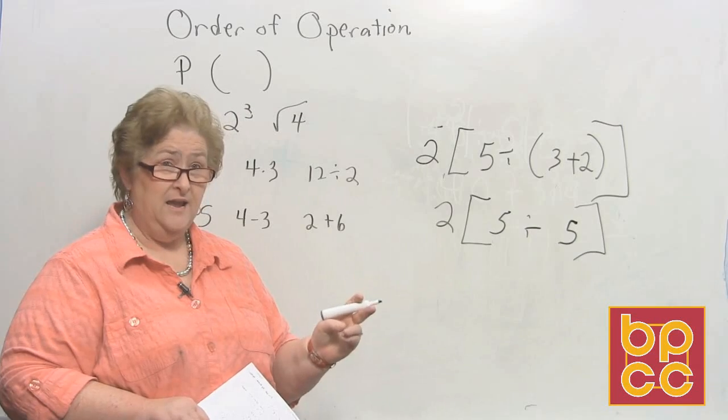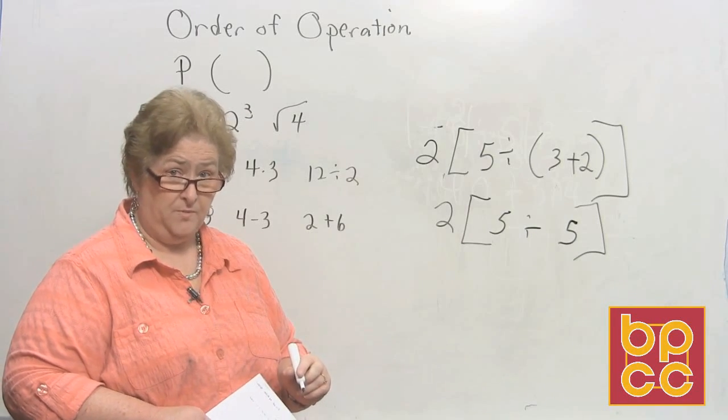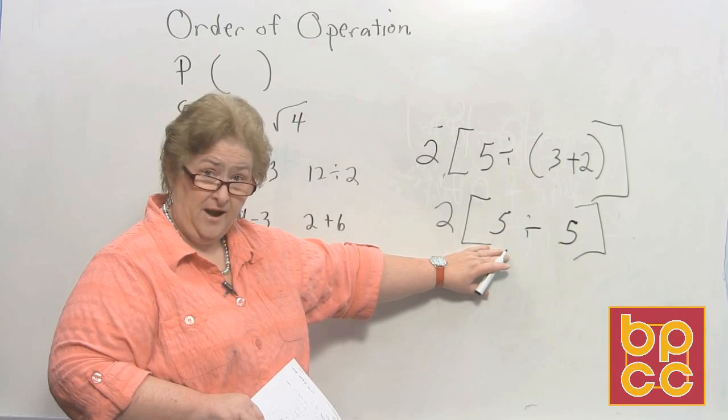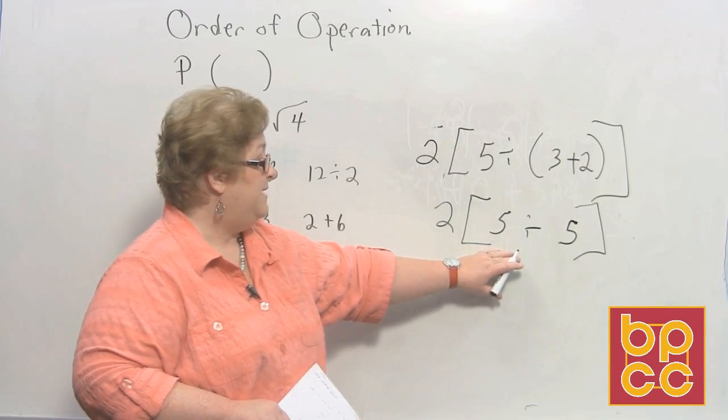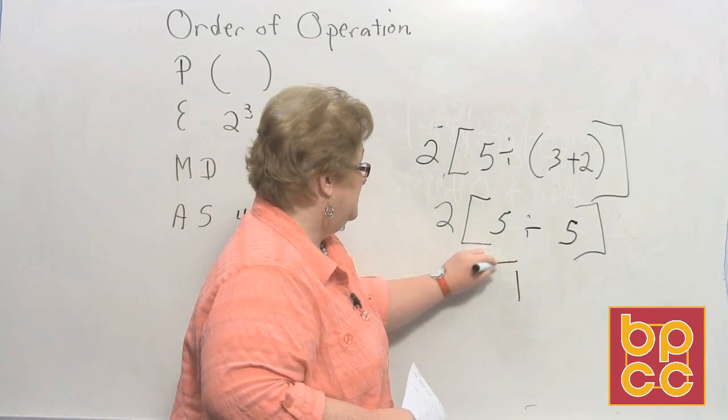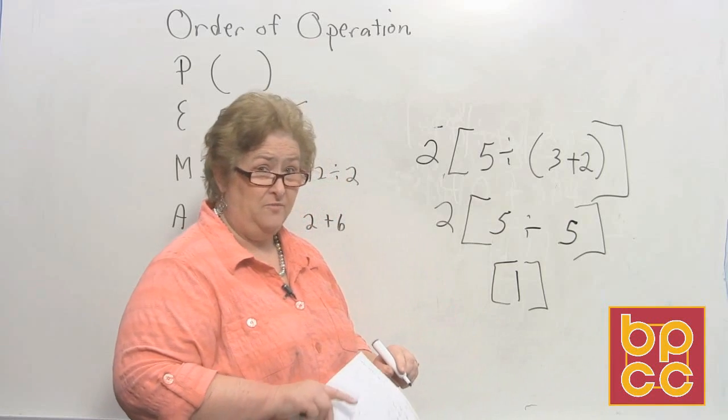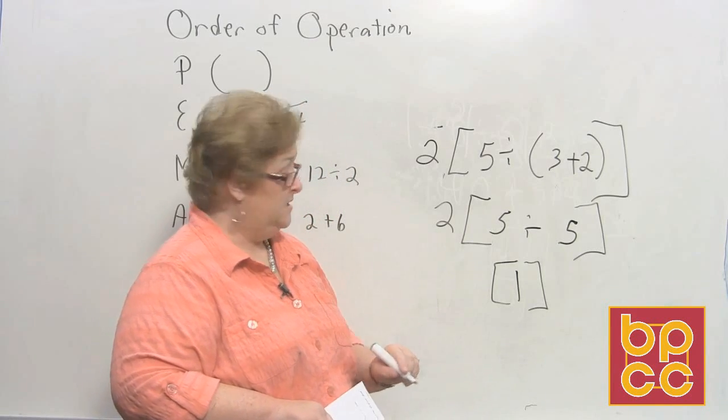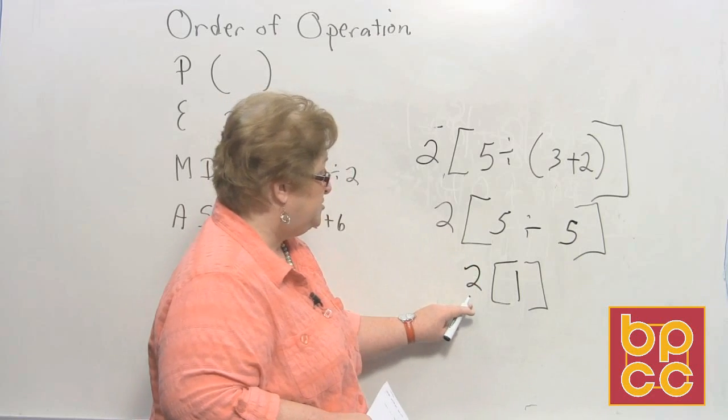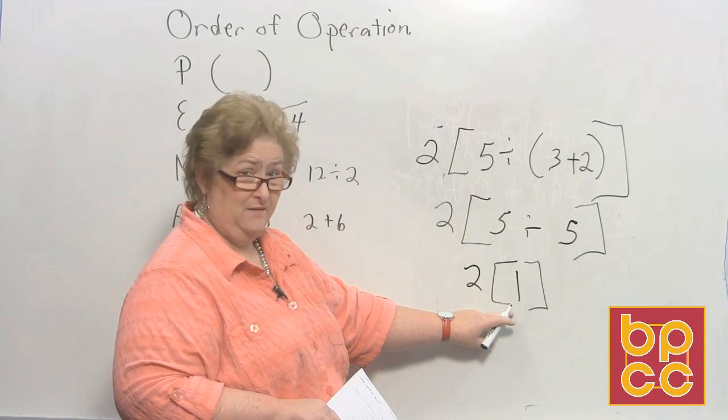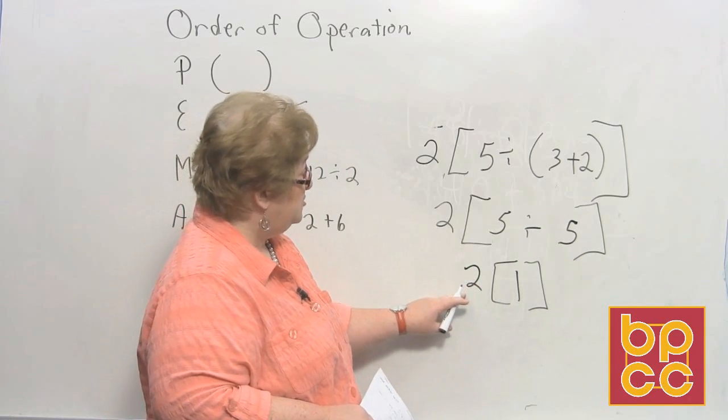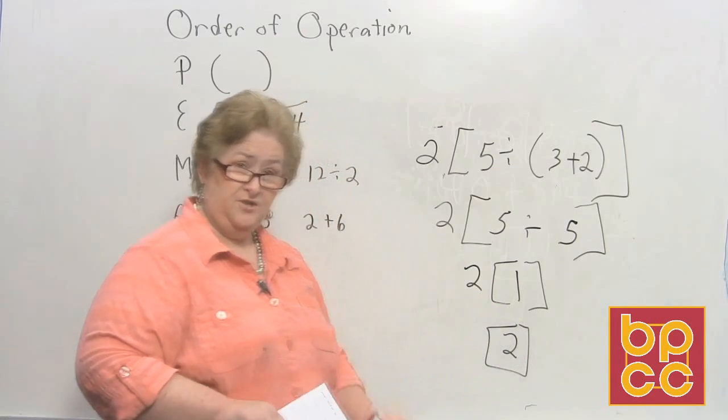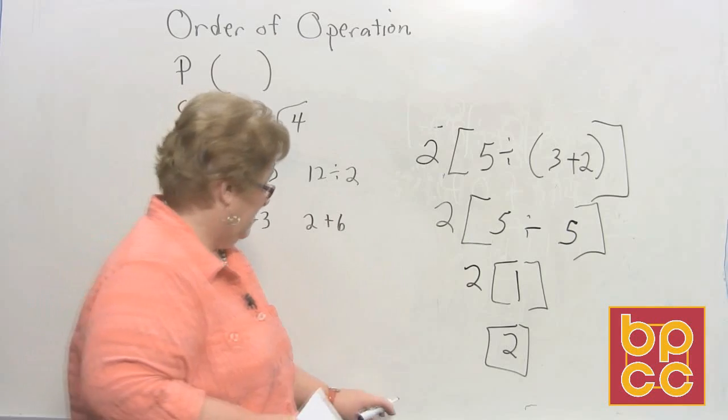And then I have 2 outside. And that 2 is hugging the bracket. And that hugging means to multiply. But before we do that, we need to go ahead and take care of what's inside the brackets. 5 divided by 5 is 1. Now you can keep the brackets. But if you take the brackets off, you better put a multiplication sign between the 2 and the number 1. Because that 2 hugging means 2 times 1. So 2 times 1 is 2. And the answer is 2.